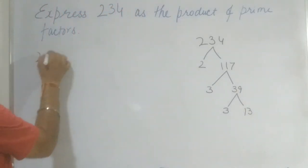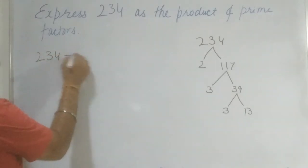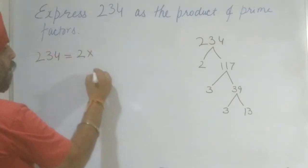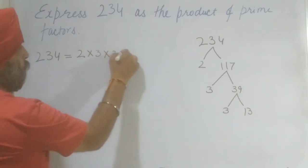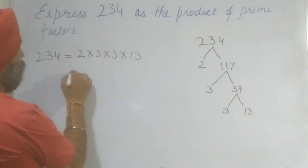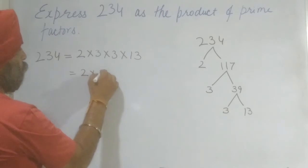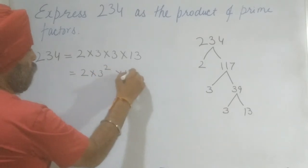So we are going to express this number in the form of prime factors. So 2 into 3 into 3 into 13. And the next step is 2 into 3 square into 13.